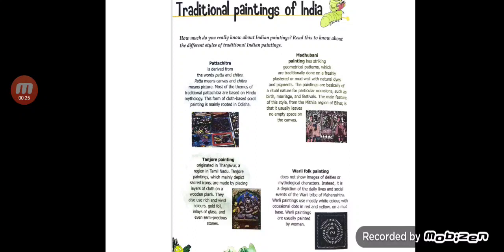First is Patta Chitra. It is derived from the words 'patta' and 'chitra' — patta means canvas and chitra means picture. Most of the themes of Patta Chitra are based on Hindu mythology. This form of cloth-based scroll painting is mainly rooted in Odisha.